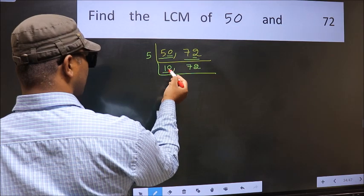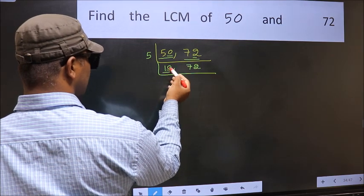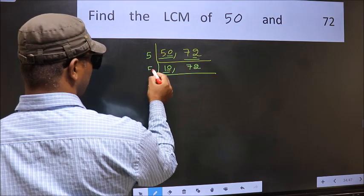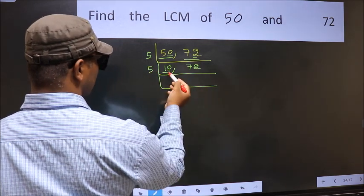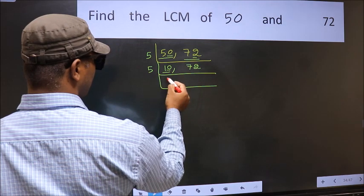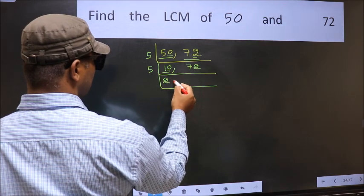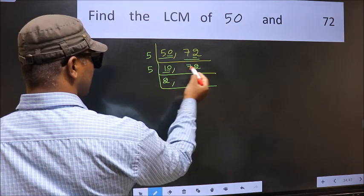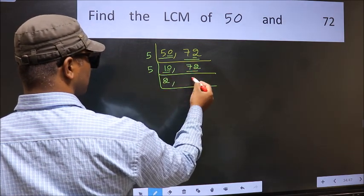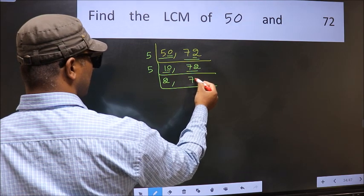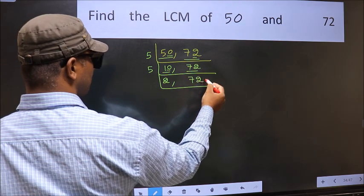Now we have 10 — last digit 0, so take 5. When do we get 10 in the 5 table? 5 times 2 is 10. The other number 72 is not divisible by 5, so we write it down as it is.